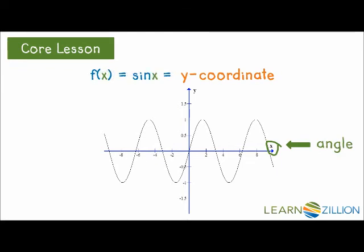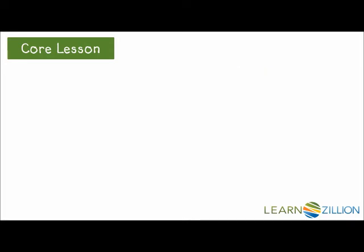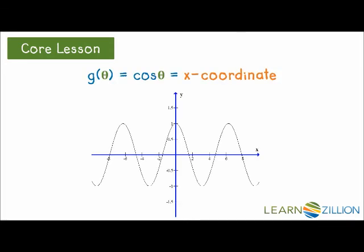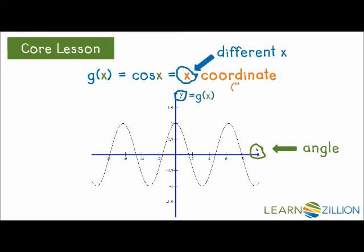This is a little bit trickier for the cosine function. Not only are we calling the angle x again, but we need to realize that the vertical axis or range is usually called y. The x on the unit circle is not the same x as the x on the graph of our function. This is sometimes a source of confusion for students. We're using x and y on the unit circle in a completely different way than the x and y on our graph.